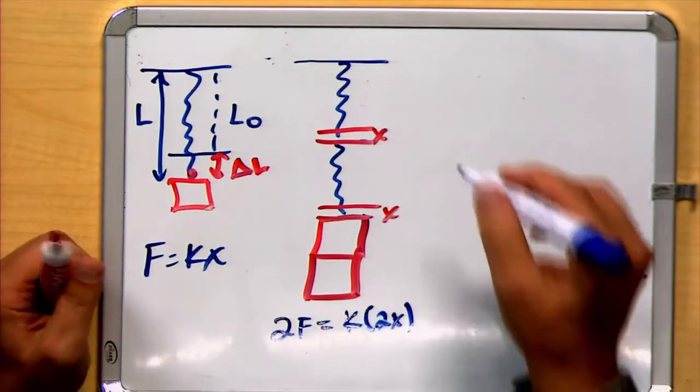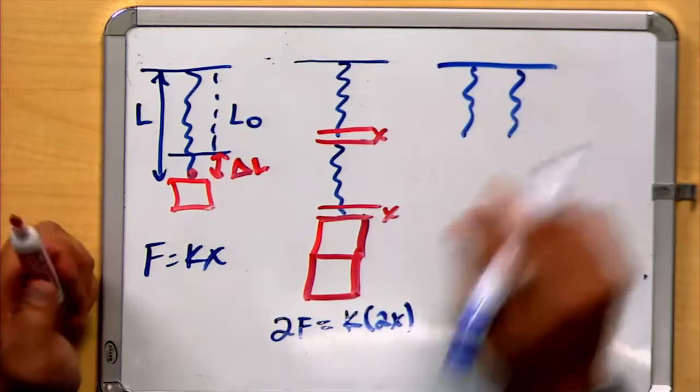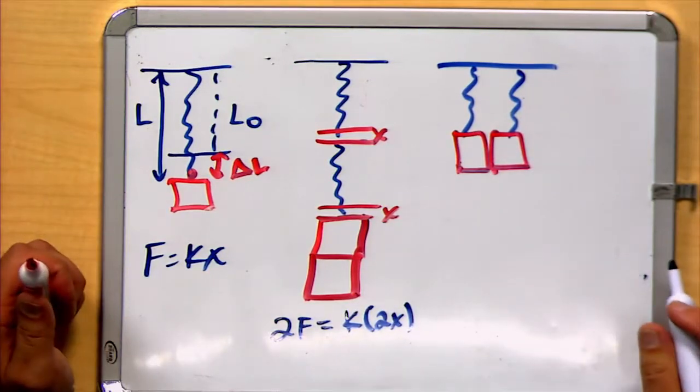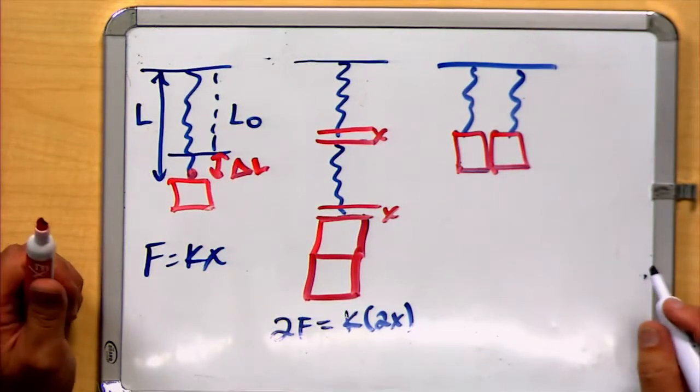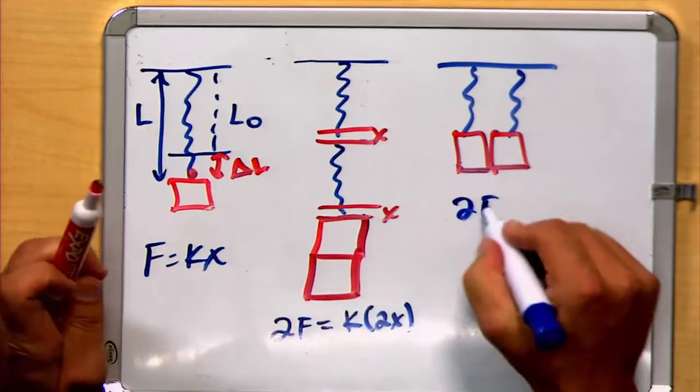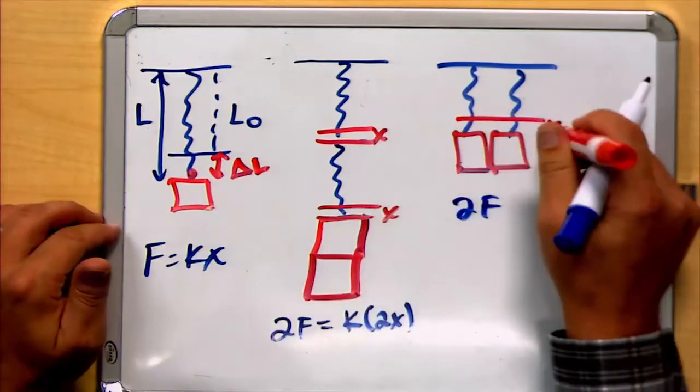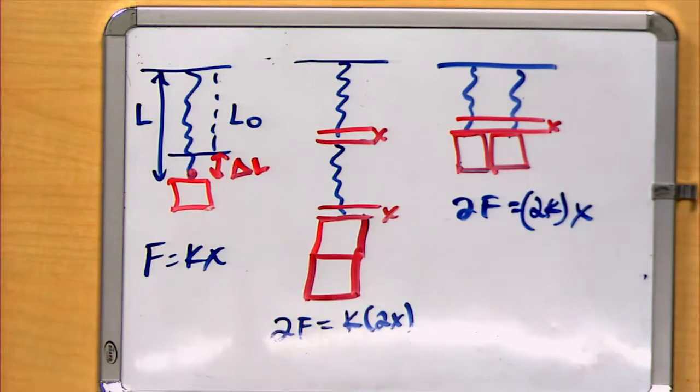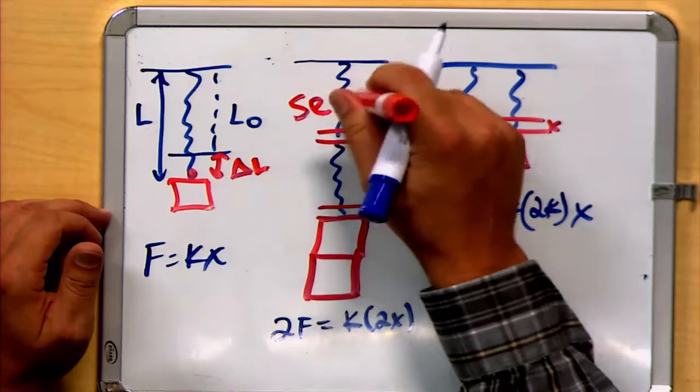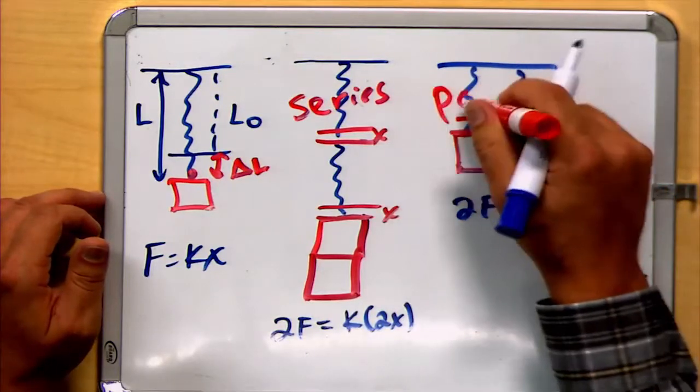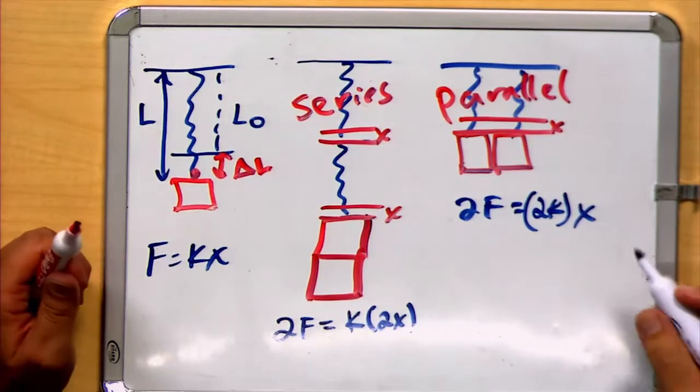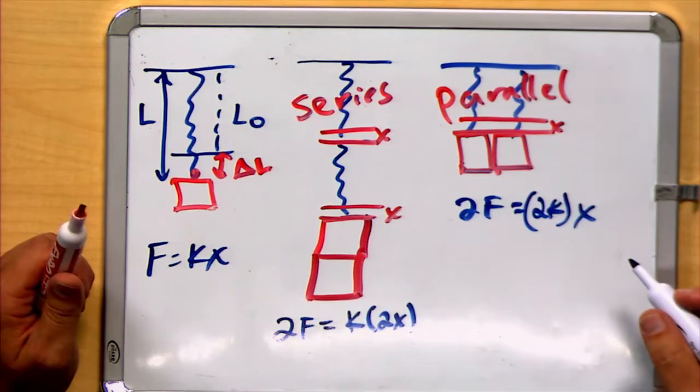However, if we instead supported it with two springs that were organized differently, and we placed the weights on each of those springs, notice that organization would change things a little bit. Effectively, we would have two times the force that would only move that distance X, but because we have two springs, we can consider it as having twice as much stiffness. This sort of arrangement or organization, the first one would be called arranged in series, and the second one would be called arranged in parallel, because the two springs would be parallel. Notice the arrangement sort of leads to different sort of response.